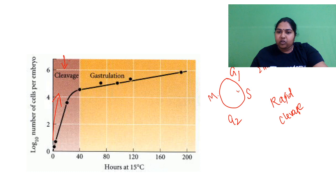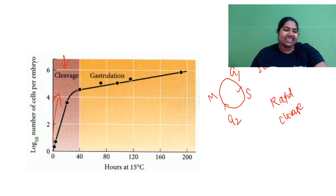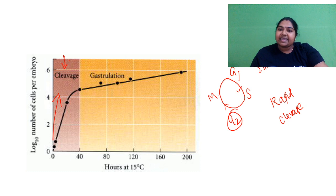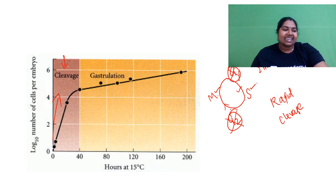So the four phases — G1, G2, and M — are there. But during cleavage it will not have time for all the phases. So what it will do? This gap phase G1 and G2 will be skipped. It will go only with the S phase as well as the M phase. Only these two keep on rolling, and this is giving it a rapid cleavage.